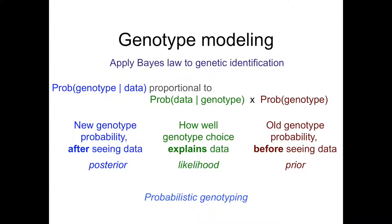Genotype modeling is just applying Bayes' law to genetic identification. We begin on the right in brown with a random population — the random genotype of what allele pairs would be, maybe 100 different allele pairs at each locus. Then quantitative data is looked at, usually short-tandem repeat or STR data, considering all possible genotypes, but also other variables like stutter, degraded DNA, and variances of all these parameters. After considering data, we end up with a new genotype probability — our belief in the different genotypes for each contributor at each locus.